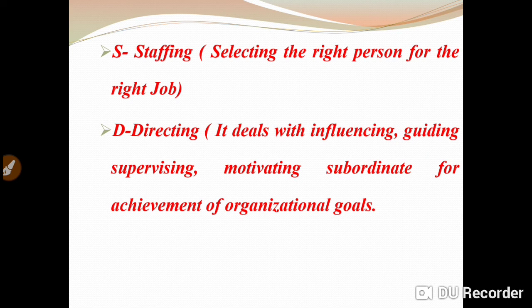D refers to Directing. Directing ka matlab hota hai deals with influencing, guiding, supervising, and motivating subordinates for achievement of organizational goals. We give direction to our subordinates and workers. Direction ke saath bahut saare elements hote hain: number one is Supervision, number two is Motivation, number three is Leadership, number four is Communication. Communication also plays a very vital role. That is the D for Directing.